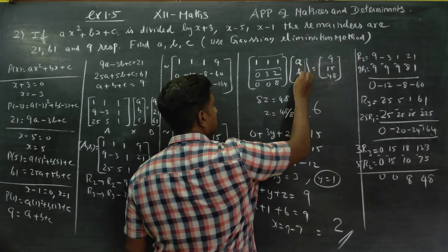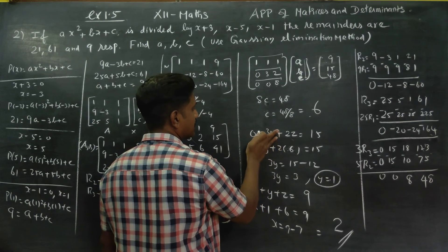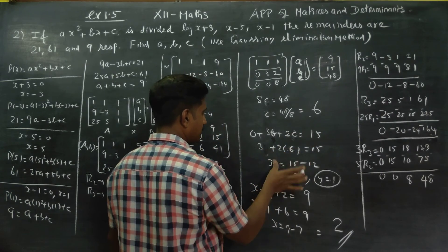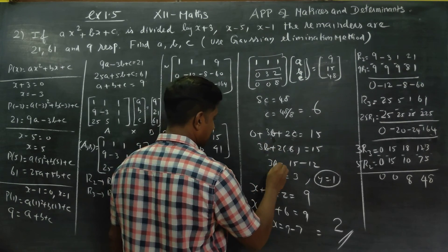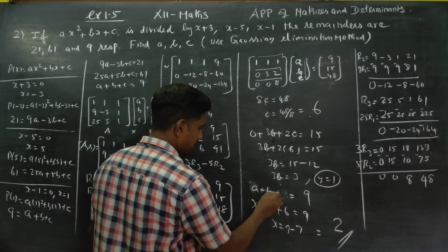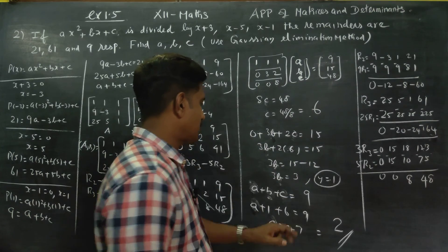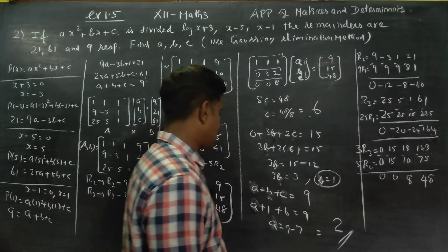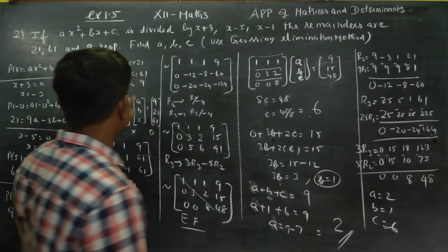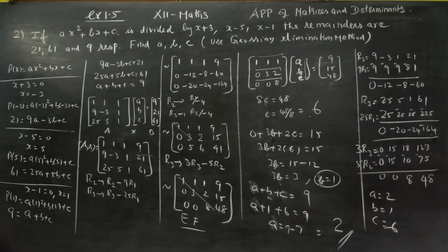Since x, y, z correspond to a, b, c respectively: therefore a = 2, b = 1, c = 6. Thank you.